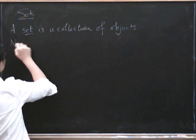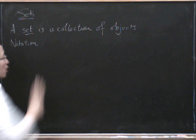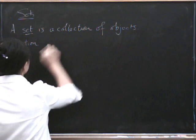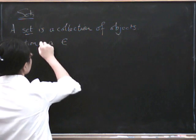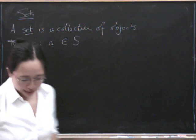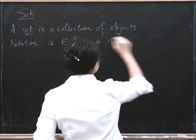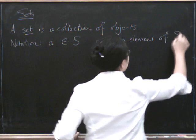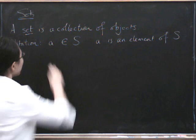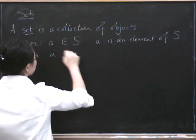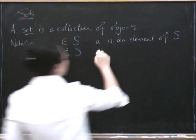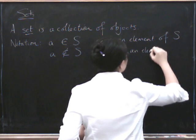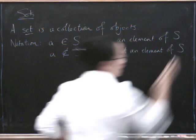Here's some notation for it. The objects inside a given set are called elements of the set. And we write that as A is an element of a set S. So that means A is an element of S. So if it's not an element of S, then we put a line through our little element sign. Then A is not an element of S.